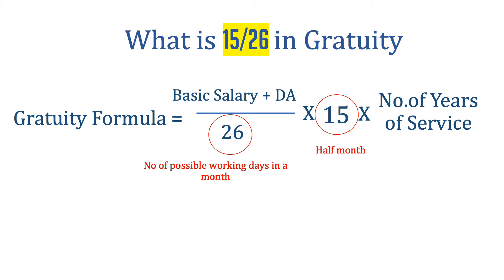So in the Gratuity Calculation Formula, 26 is the number of possible working days in a month, and 15 is used to calculate the half-month salary of that employee.